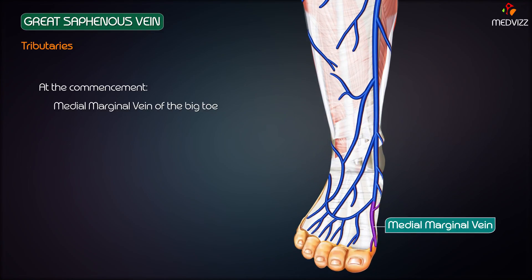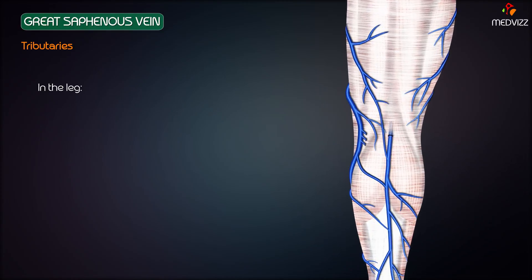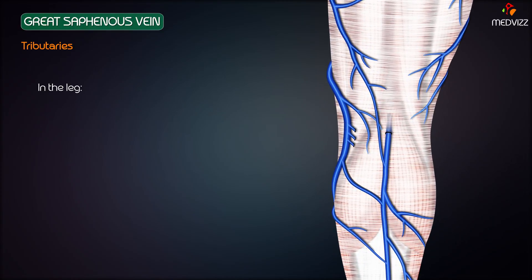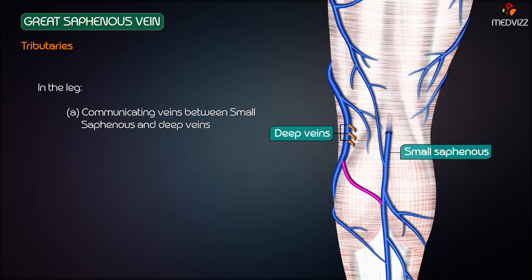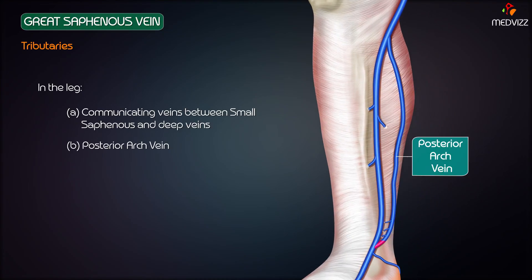At the commencement of the long saphenous vein, the medial marginal vein of the big toe is the first and important tributary at the origin. In the leg, the communicating veins between the small saphenous and deep veins are present, and another important one is the posterior arch vein.